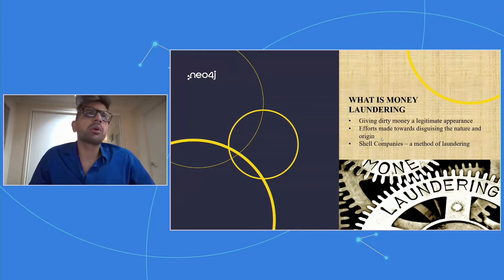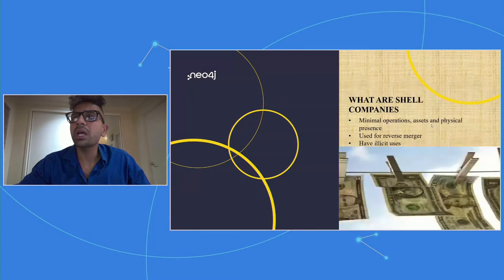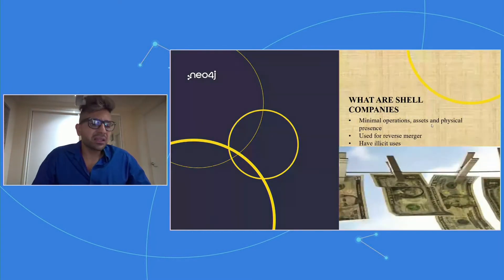There are several ways to launder money and one of those methods was using shell companies. So my next question was what are these shell companies? These are entities with low or no physical presence and economic values. These are also known as front companies or anonymous entities.